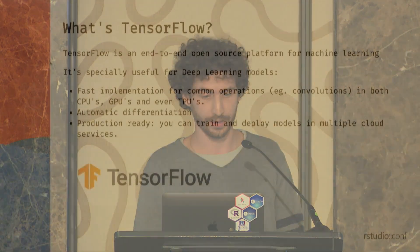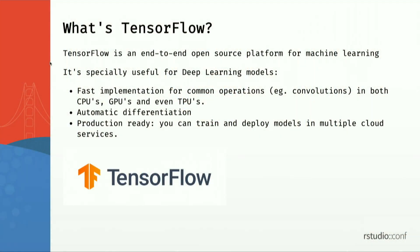First, a quick recap on what TensorFlow is. TensorFlow is an open source platform for machine learning. It's especially useful for deep learning. It has fast implementations of most common operations in deep learning, like convolutions, and it's very efficient for both CPUs, GPUs, and even TPUs, which is the Google hardware for deep learning. It provides automatic differentiation, which is also very useful for deep learning, and it's really production-ready.